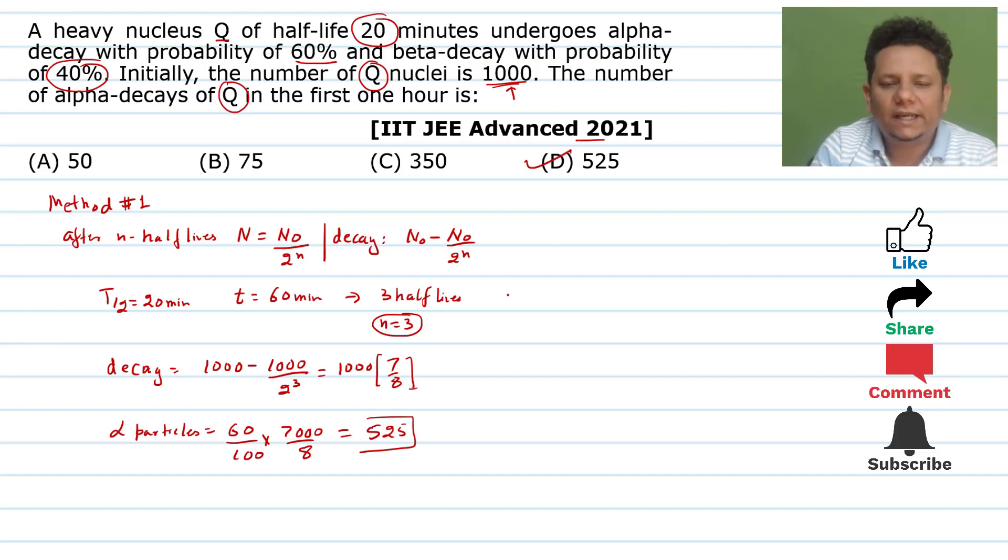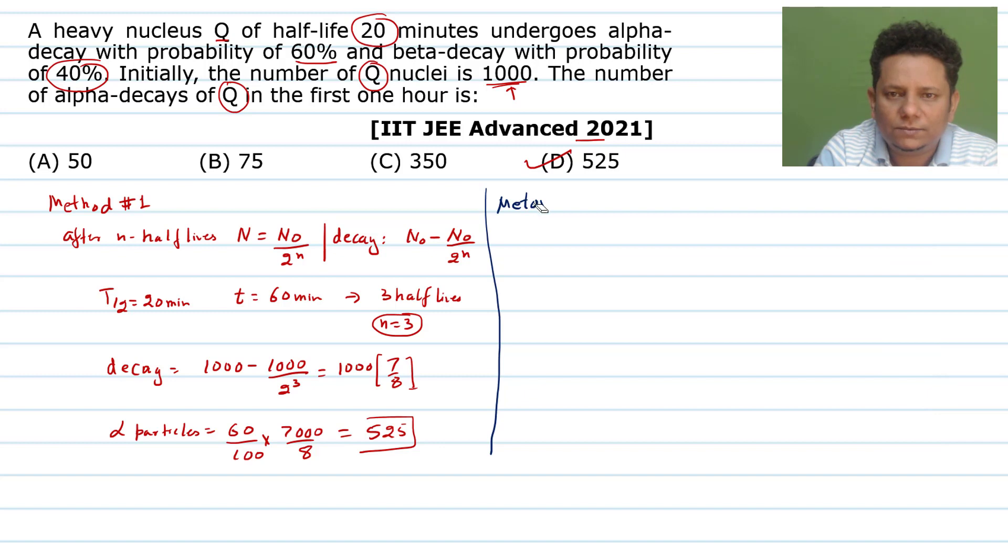Now, let's see another way to do this. So let's call this method number 2. Just in case you forget this formula and all this story, then the scenario is that you have 1000 elements. After one half-life, half of them decay.